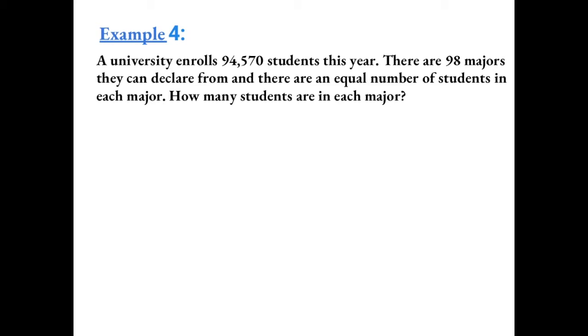Example 4: A university enrolls 94,570 students this year. There are 98 majors they can declare from and there are an equal number of students in each major. How many students are in each major?